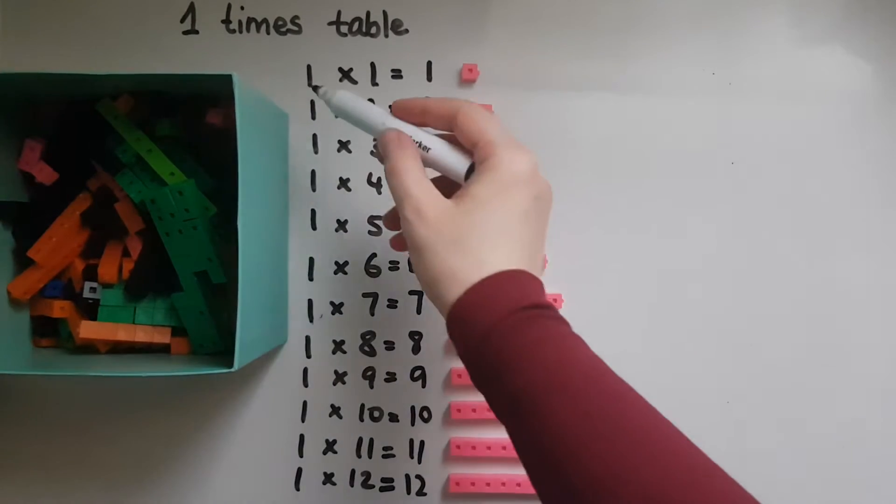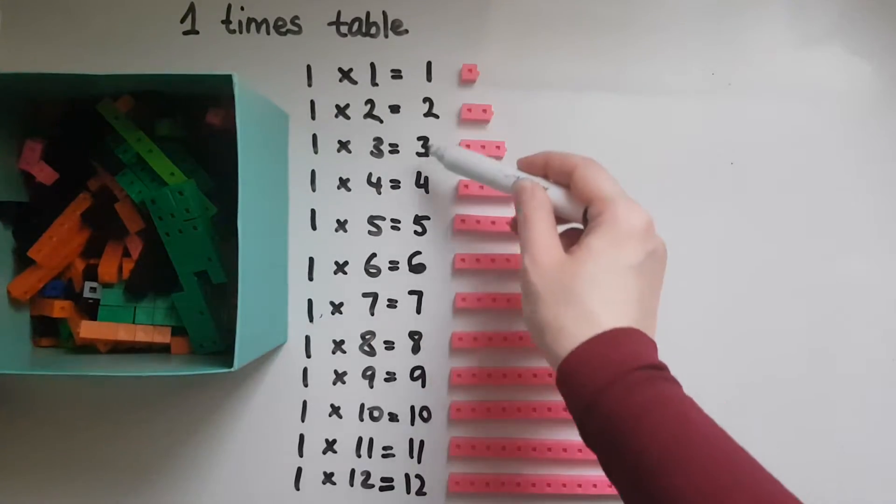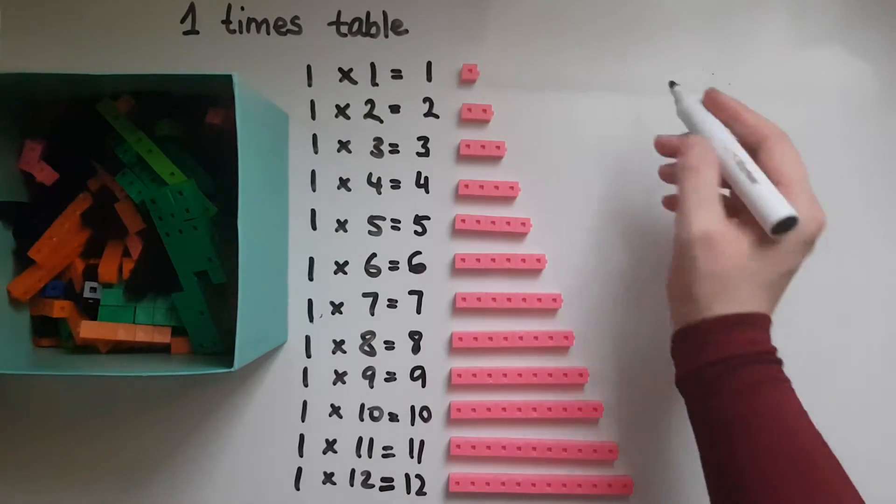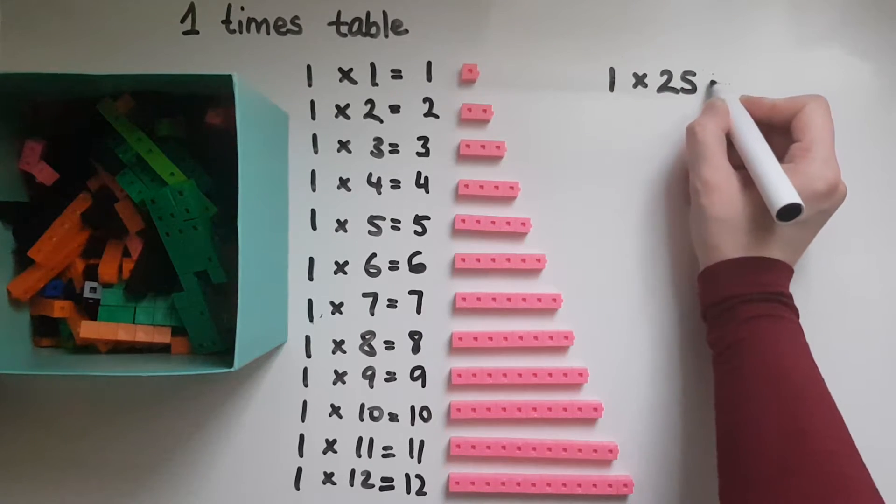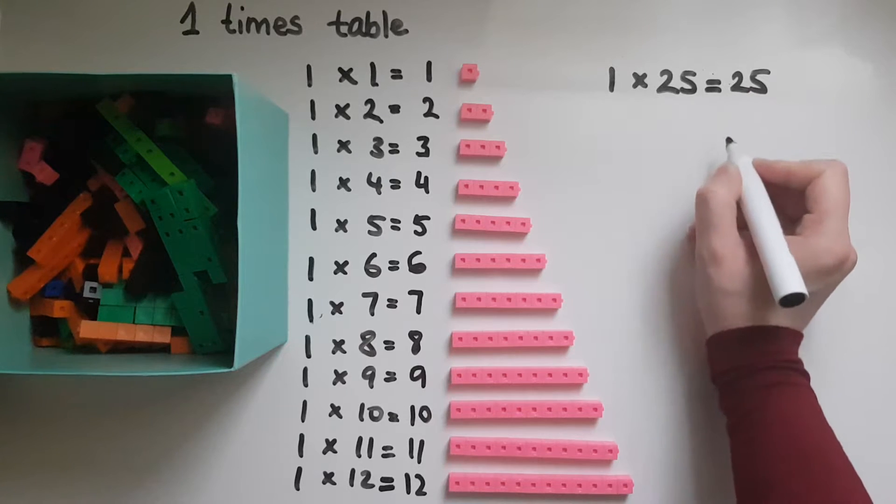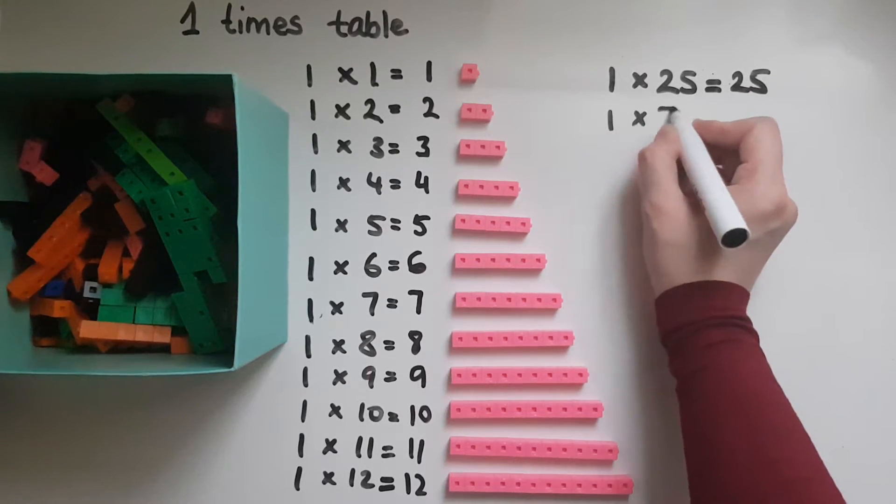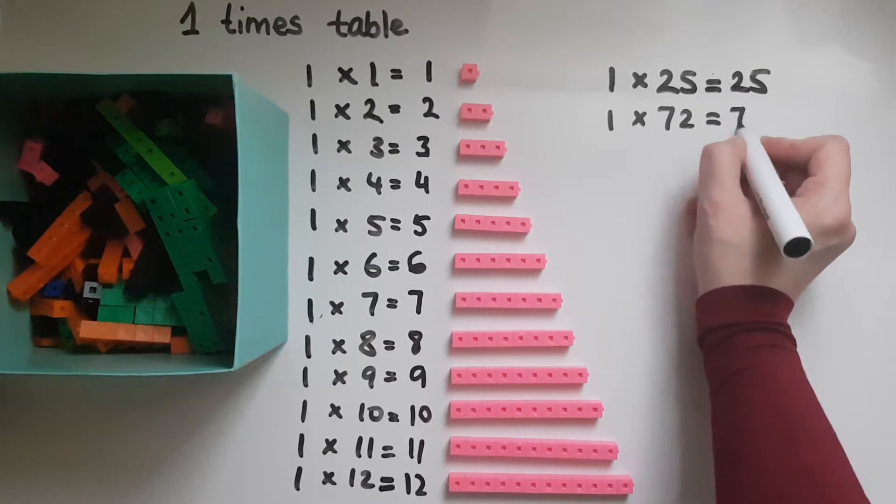So one times a number is equal to the number itself. So I can do one times 25 for example and it's gonna give me 25. One times 72 and it's gonna give me 72.